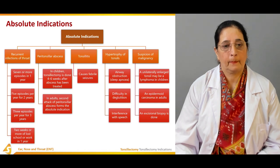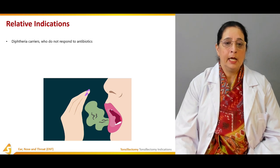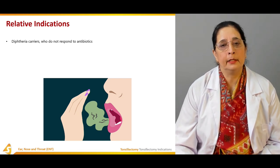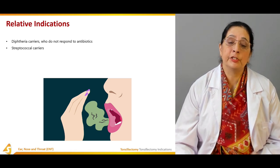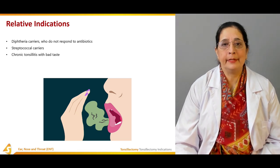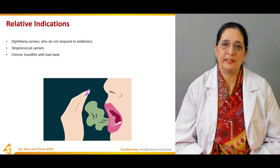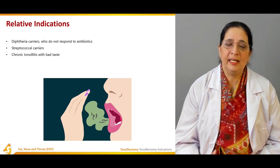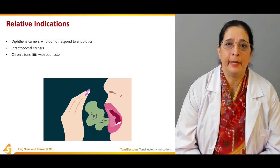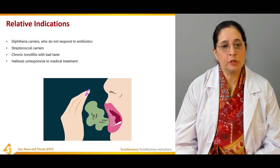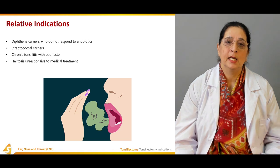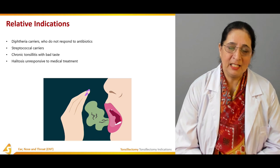The relative indications of tonsillectomy include: diphtheria carriers who do not respond to antibiotics, and streptococcal carriers where strep throat is a relative indication. Chronic tonsillitis with bad taste in the mouth is another relative indication — patients with chronic tonsillitis develop a persistent bad taste. Halitosis, or bad breath, that is unresponsive to treatment is also a relative indication, as many patients with chronic tonsillitis suffer from bad breath.